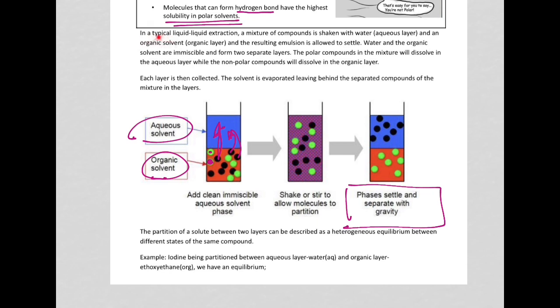A typical liquid-liquid extraction consists of a mixture of compounds that is shaken with water. So this is the aqueous layer. Whatever is polar is going to be attracted to the water. And you have an organic solvent. Whatever is non-polar will be attracted to the organic solvent. So once you shake both of them, you will end up with an emulsion. And when you allow the emulsion to settle, you will see that it separates into two different layers.